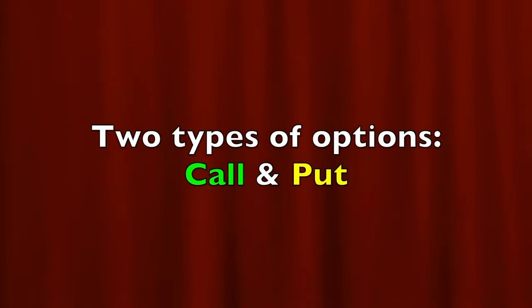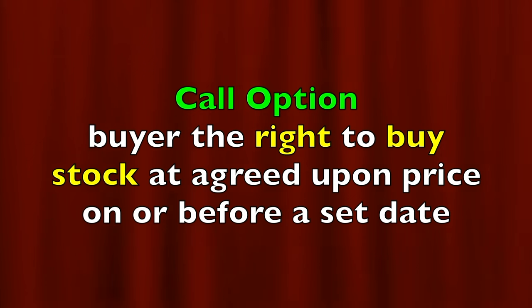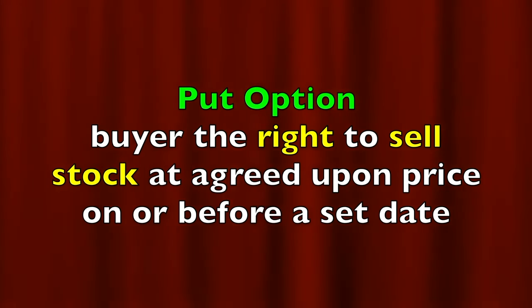Now let's talk through a few important definitions and then we'll get to the fun part where I'll show you how options can help you. There are two types of options: calls and puts. A call option gives the buyer of that option the right, but not the obligation, to buy shares of stock at an agreed upon price on or before a set date. A put option is the exact same thing, except that it gives the owner the right, but not the obligation, to sell shares of stock at an agreed upon price on or before a set date.